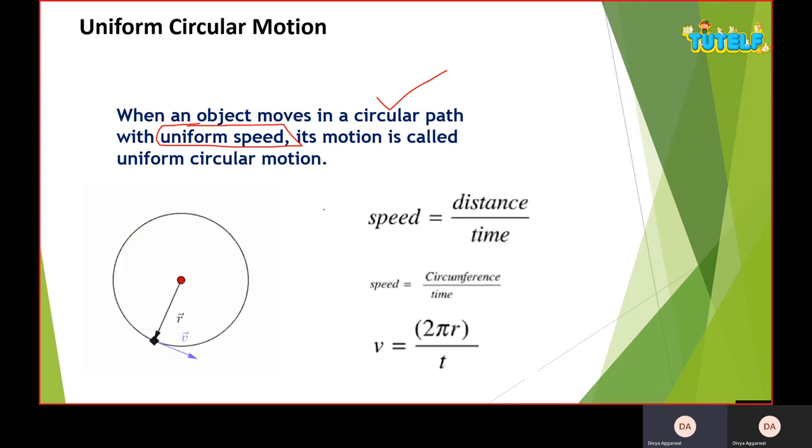In uniform circular motion, speed is distance divided by time. Since this is the perimeter, the distance is 2πr. So my velocity is 2πr divided by time, where r is the radius of the circle. This means it will cover the distance in that time.